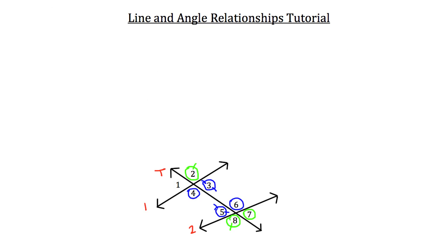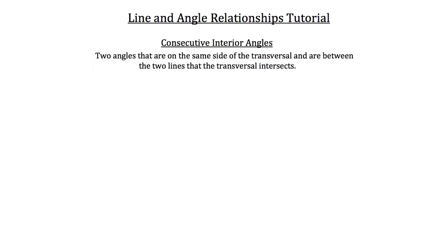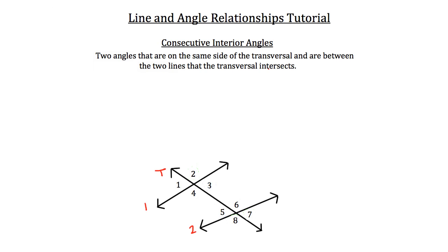Another angle relationship is consecutive interior angles — two angles that are on the same side of the transversal and between the two lines it intersects. Angles four and five are consecutive interior angles because they're on the same side of the transversal and between the two lines. Another pair of consecutive interior angles would be angles three and six — they're on the inside of the two lines and on the same side of the transversal, in this case the right-hand side.